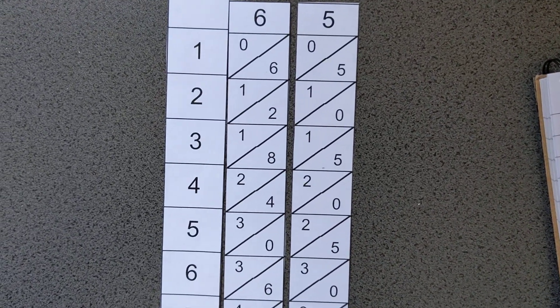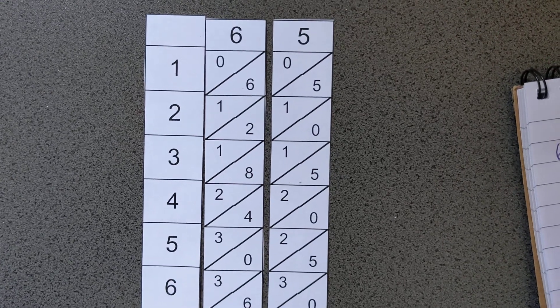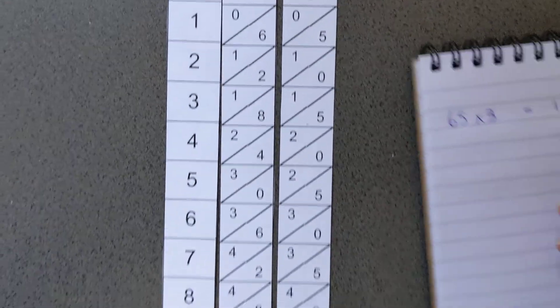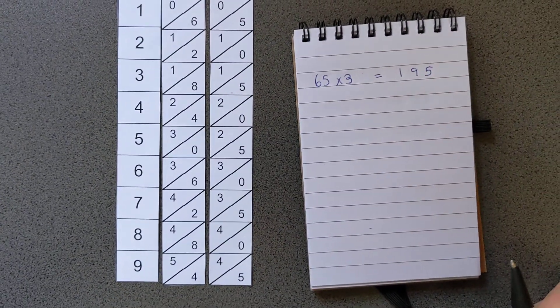So I would say 5 for the units, and then we add up diagonally for the next column. So that's a 9, 8 and 1 makes 9, and then we've got the 1 on its own at the end. So 65 times 3 is 195.